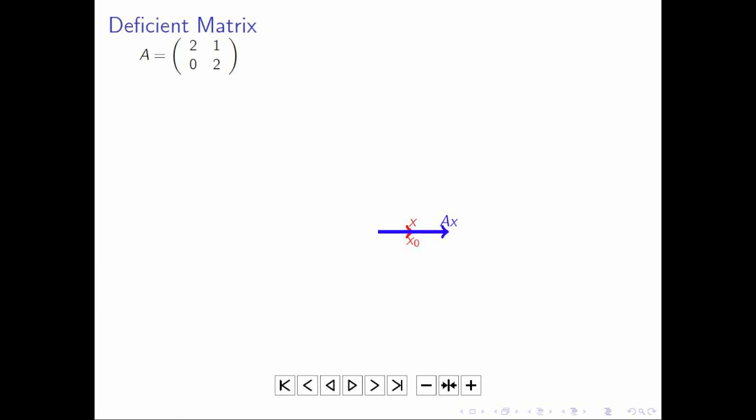Now, here we have the matrix 2, 1, 0, 2. Obviously, lambda equals 2 is an eigenvalue. Subtract that off, you end up with the matrix 0, 1, 0, 0. It only has one linearly independent eigenvector. And therefore, it is deficient.